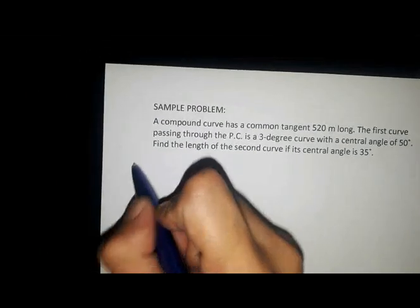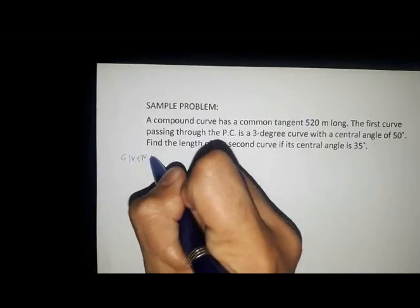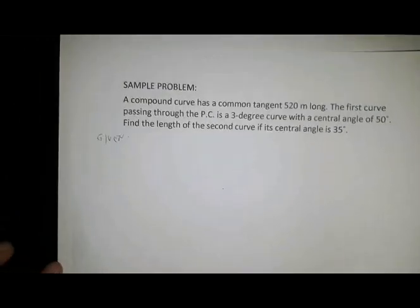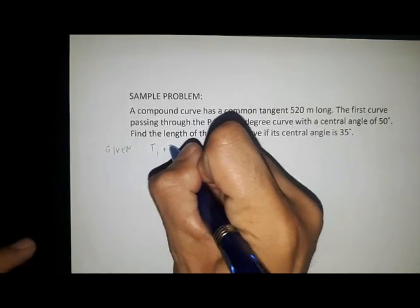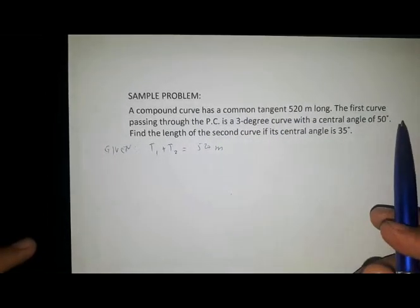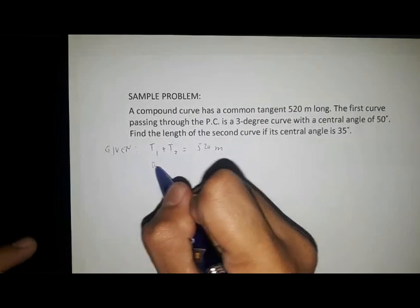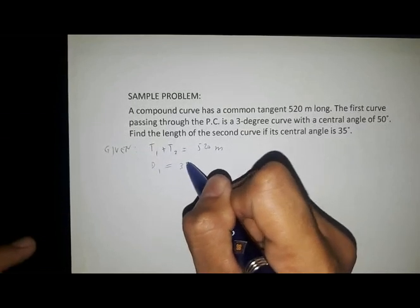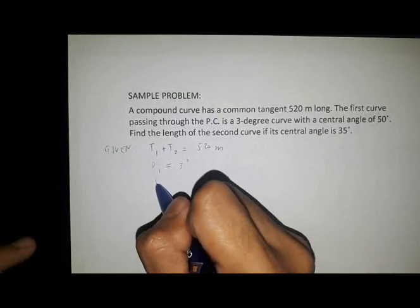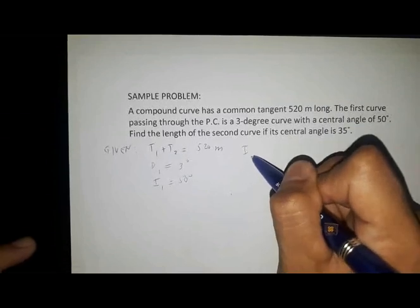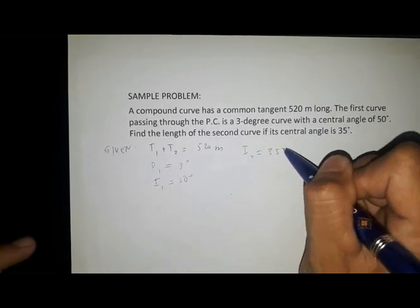First, let's identify the given values. We have the common tangent T1 plus T2 equals 520 meters. The degree of the first curve D1 equals 3 degrees. The central angle of the first curve I1 equals 50 degrees, and the central angle of the second curve I2 equals 35 degrees.